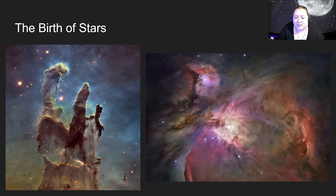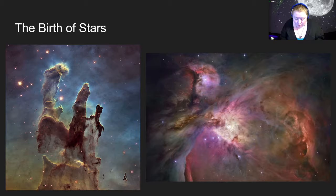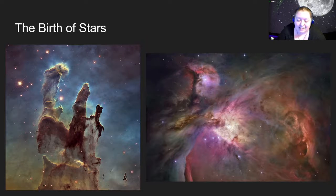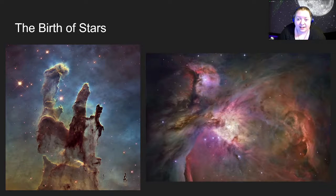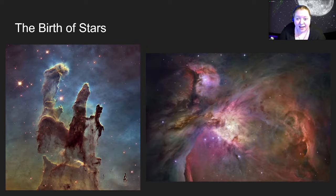These are a couple of the most famous: we have the Pillars of Creation on the left and the Orion Nebula on the right. What makes these ideal for star-forming is the fact that these clouds are very dense and pretty cold. That dense cloud means the atoms are a bit closer together, and by being cold, the atoms and the gas aren't moving super fast — they're moving pretty slowly. That creates the perfect conditions for gravity to start pulling that gas together and clumping it.